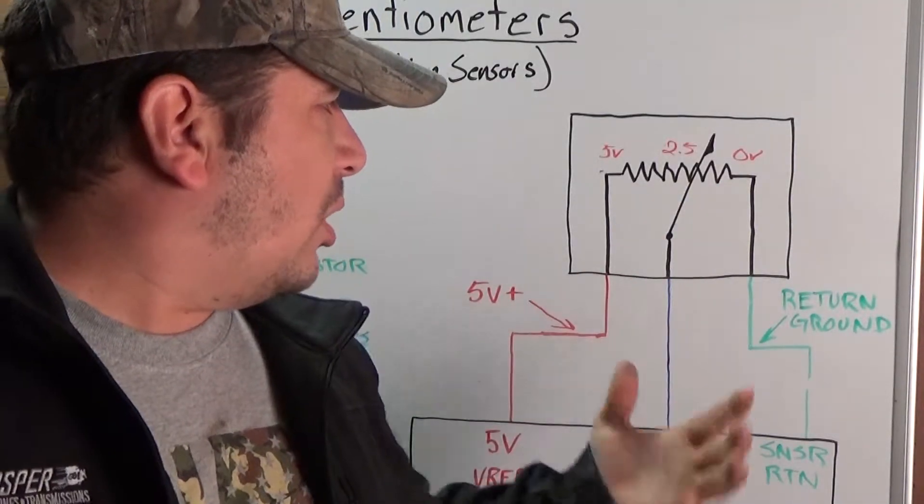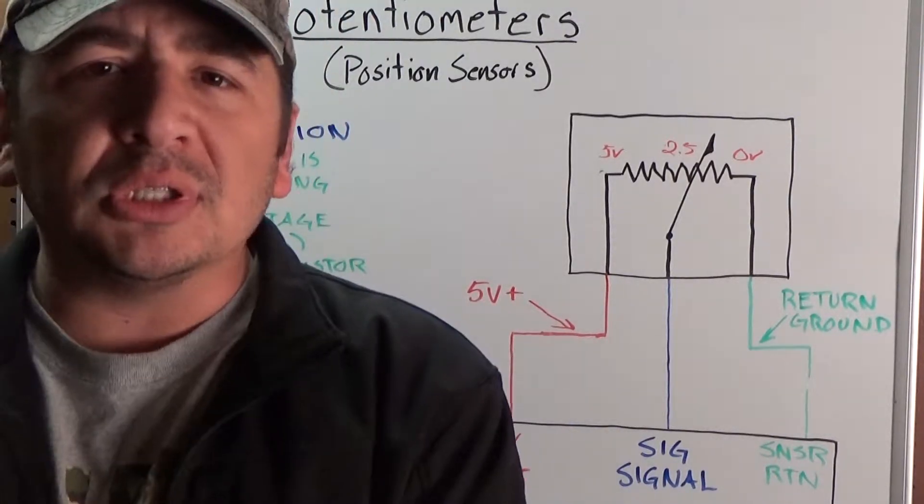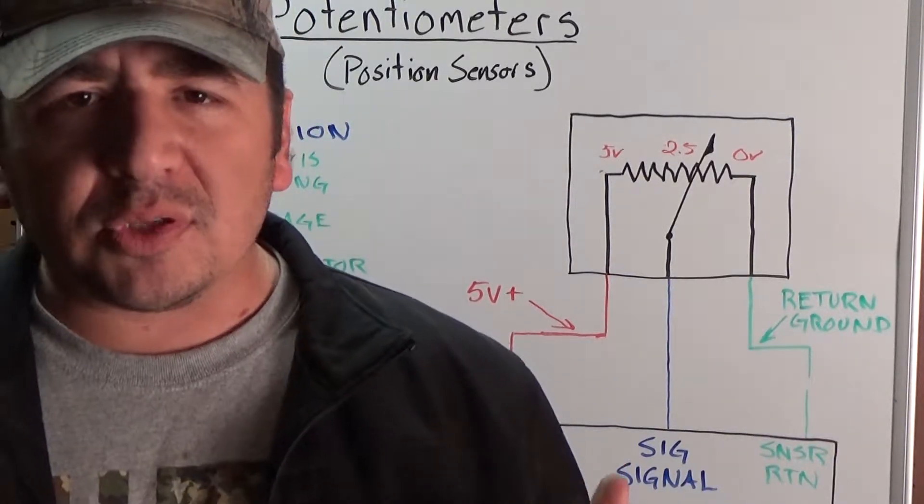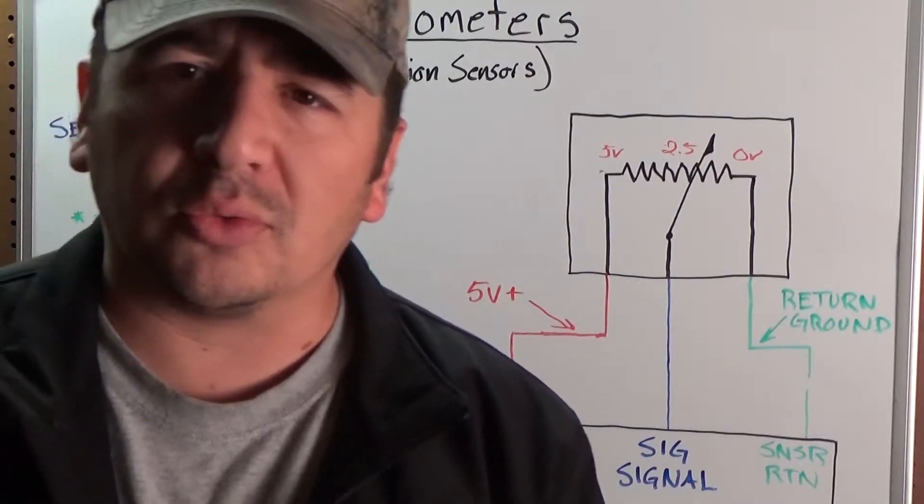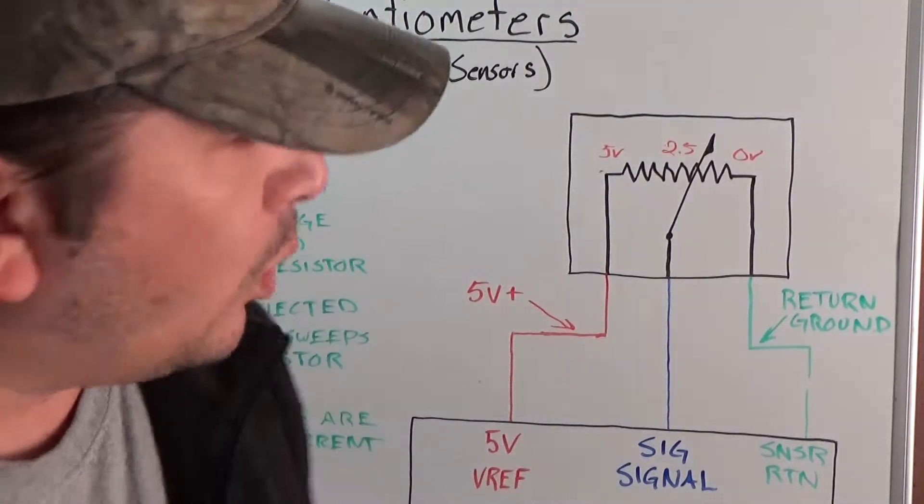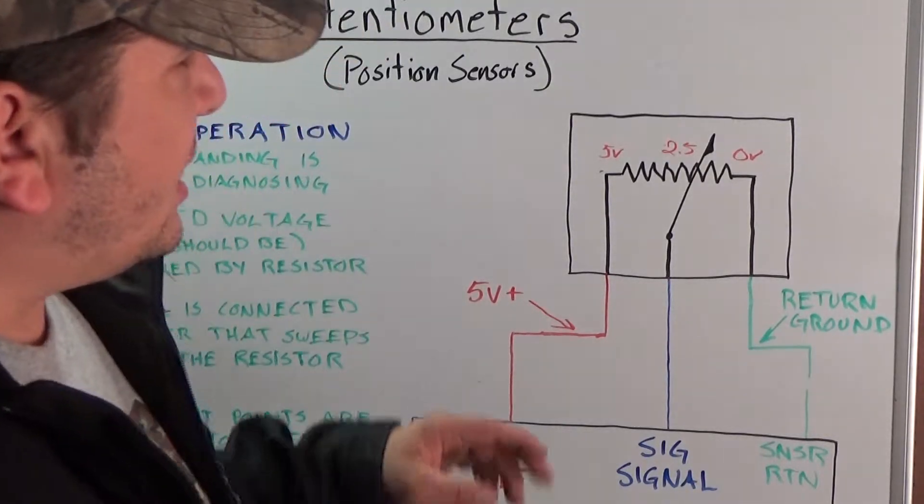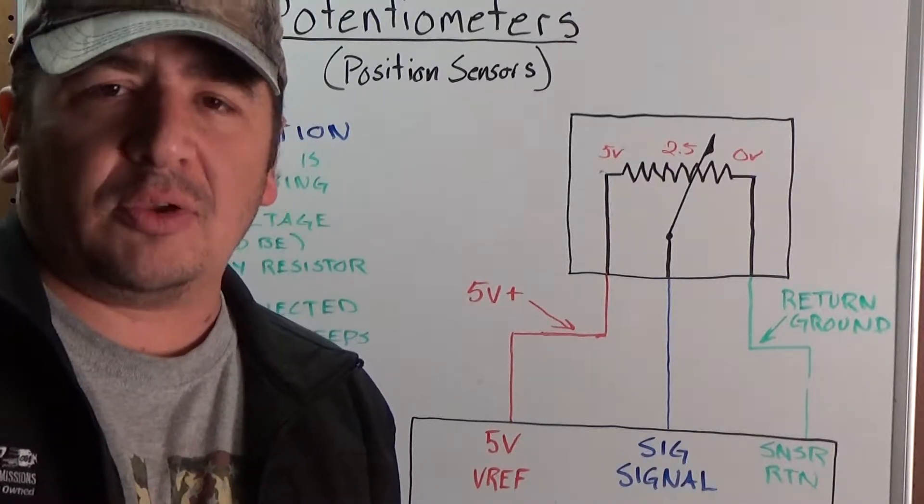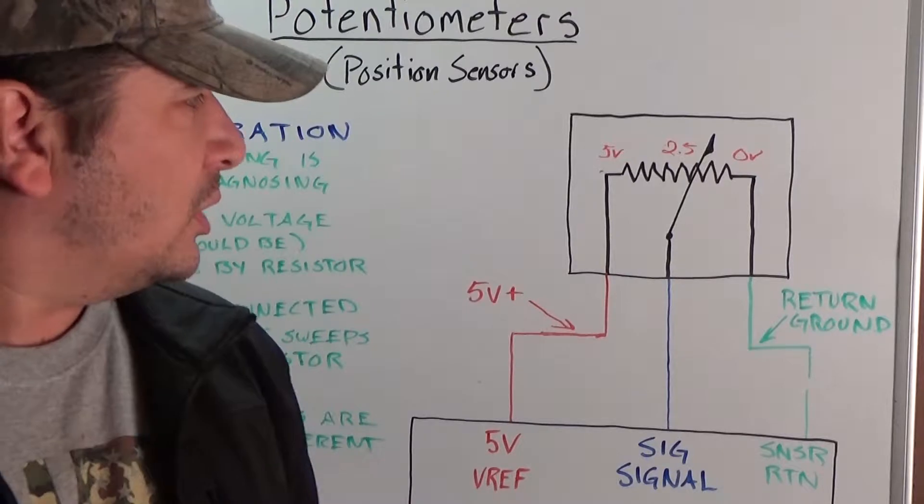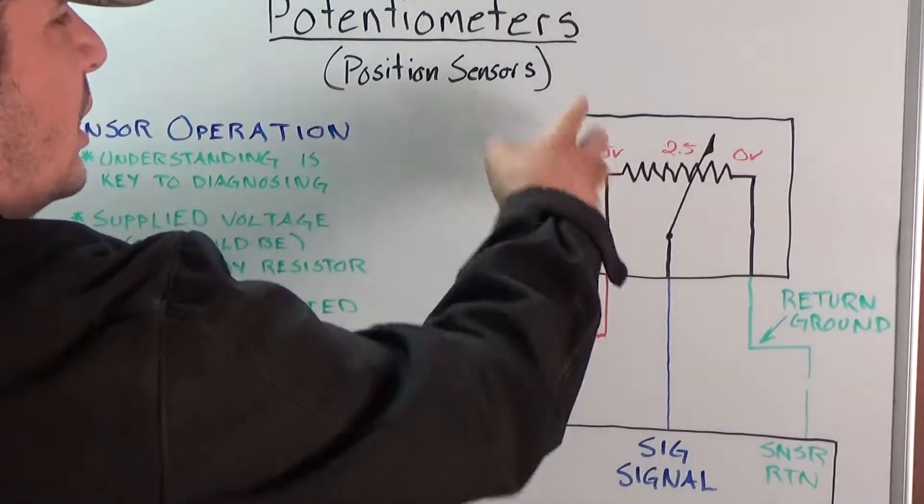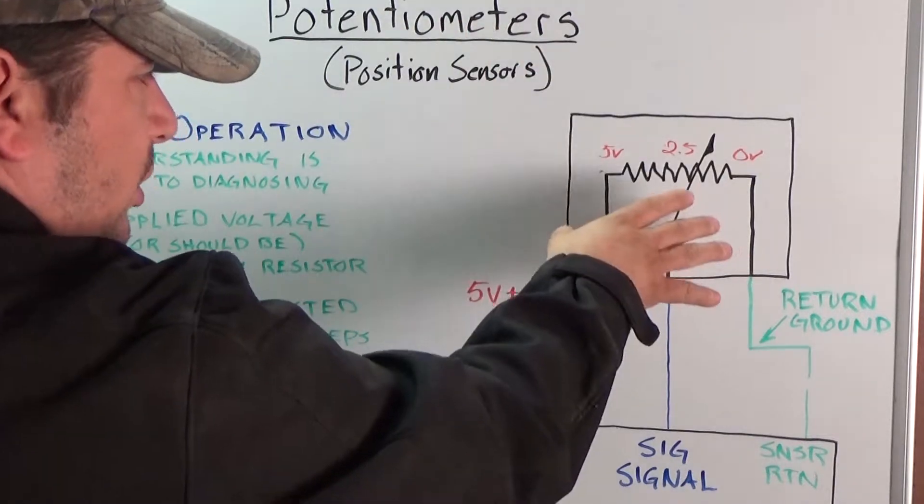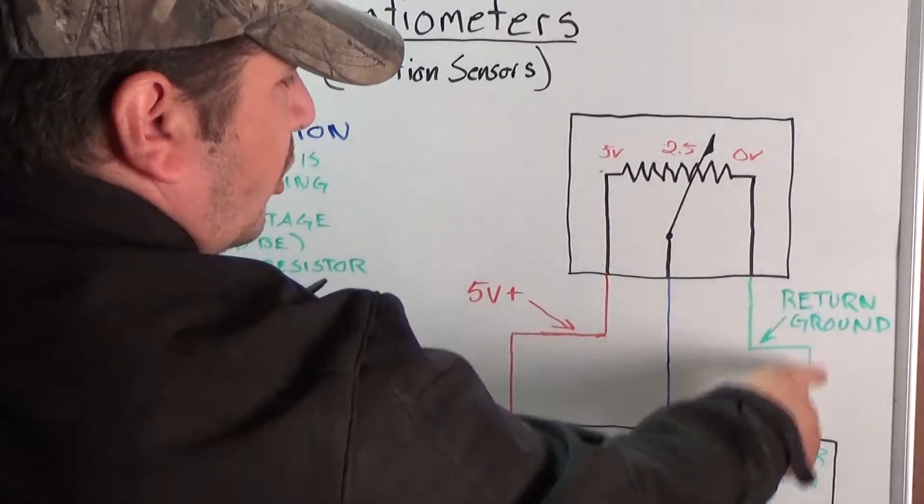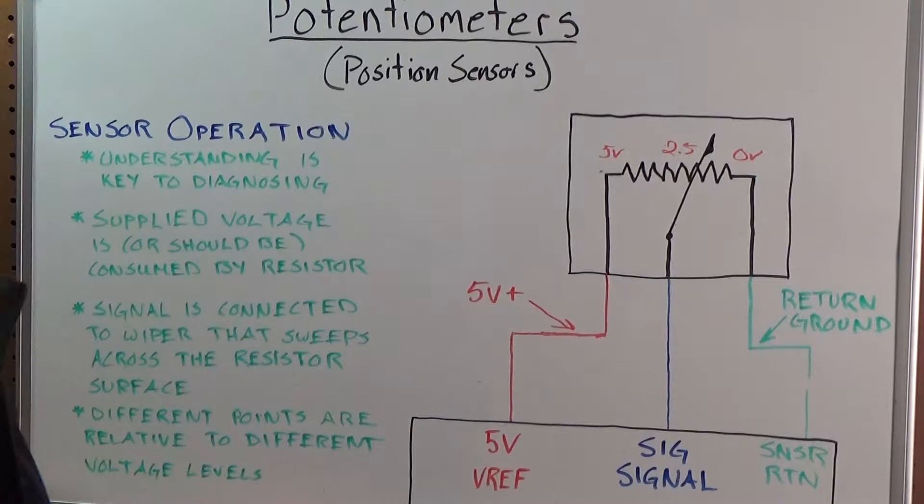What we've got here is a drawing of what a potentiometer would look like in a wiring diagram for a vehicle. And just to give it a name, we're going to call this a throttle position sensor because this looks like some of the older throttle position sensors. So what you want to understand with these is that the actual resistor inside this sensor is not going to change resistance value. That's not how we're changing the voltage signal in this case. This resistor has got a fixed value and it's not going to change. You have 5 volts supplied to the sensor and then you have a sensor ground or sensor return.